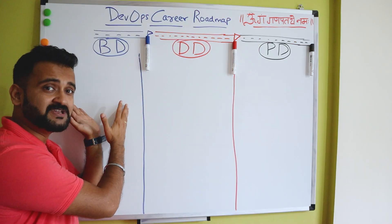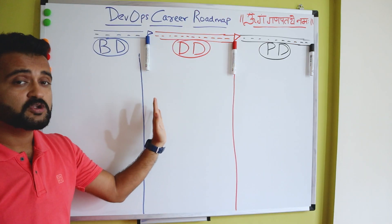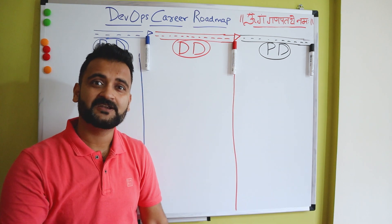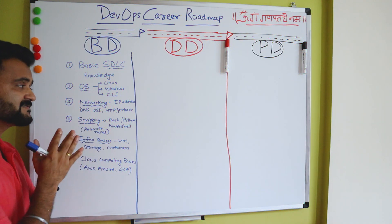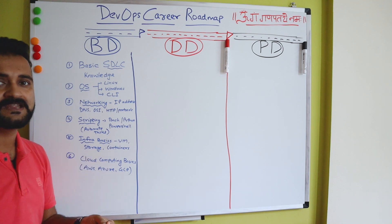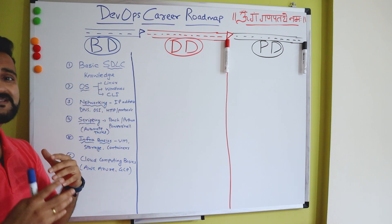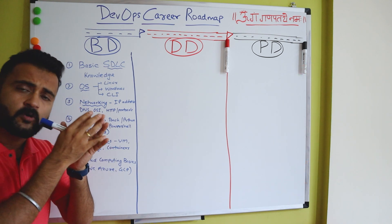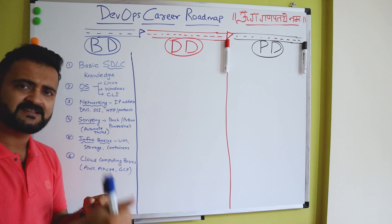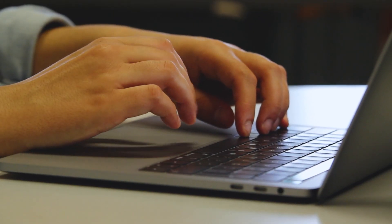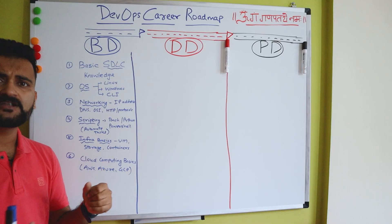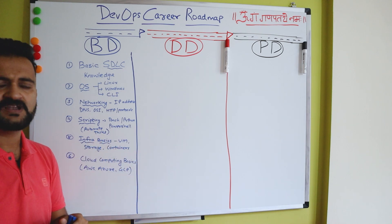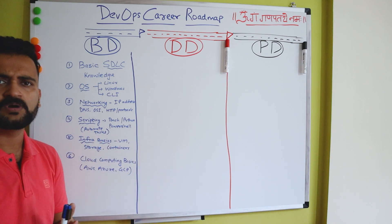We'll understand what you need before you start your journey in DevOps, what you need to learn during your journey, and what you need to continue doing once you get into a DevOps career. Even before starting DevOps, there are certain basic concepts to learn. Number one is SDLC — Software Development Life Cycle — how a software is developed, from getting requirements to building, testing, and deploying it.